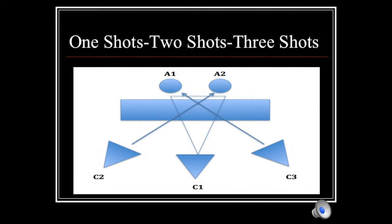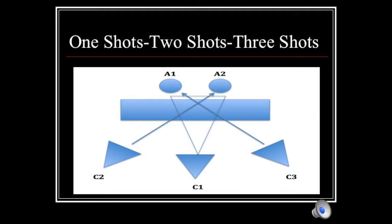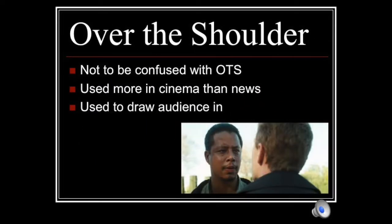Likewise, camera 3, or C3, gives you the one-shot on anchor 2. These two cameras may require some movement. You may want the anchor centered up to begin the shot, and then have the camera operator pan to the left or right to make room for an over-the-shoulder graphic. Not to be confused with the over-the-shoulder graphic, the over-the-shoulder shot is used in a one-on-one interview setting. In this case, camera 1 is positioned to get the two-shot, but cameras 2 and 3 are behind the subjects so the one-shots can be just of one person, or zoom out to get the back of the head and one shoulder of the second person.